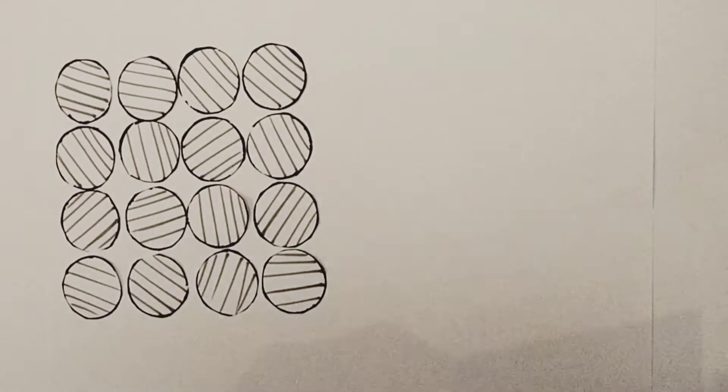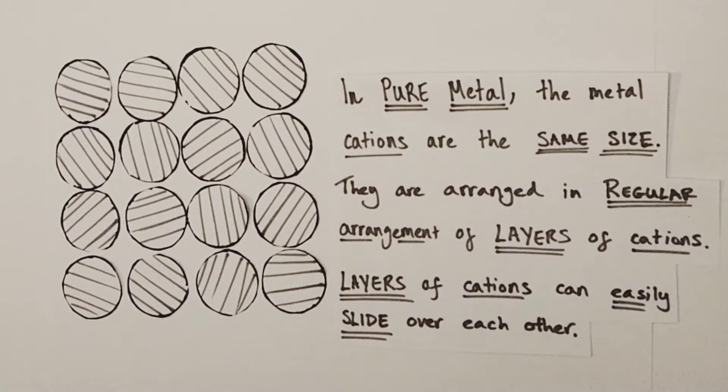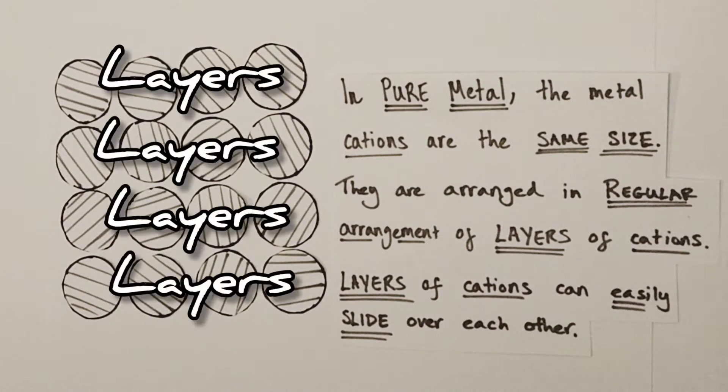Now you may also notice that in this pure metal, metal cations are the same sizes as each other. They're also arranged in a regular arrangement of layers of cations.